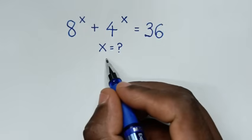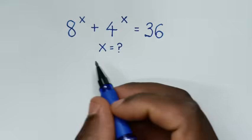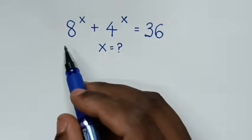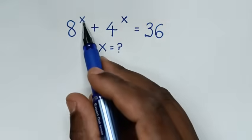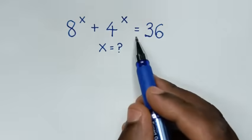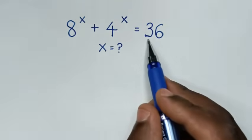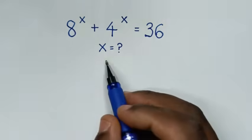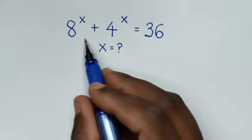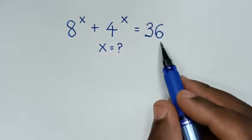Hello, you are welcome to solve this math problem, which is 8 to the power x plus 4 to the power x is equal to 36. We need to find the value of x from this equation.